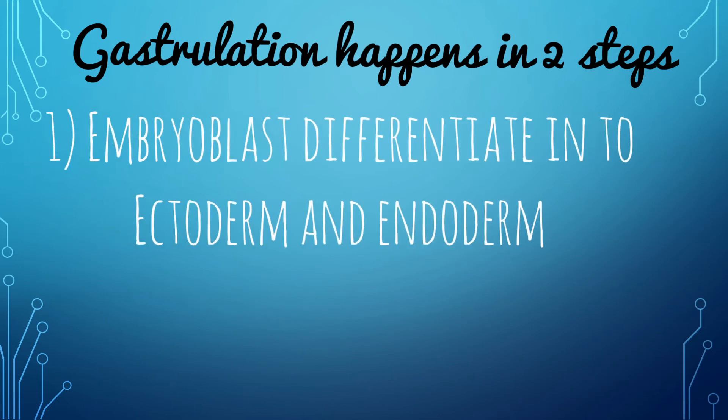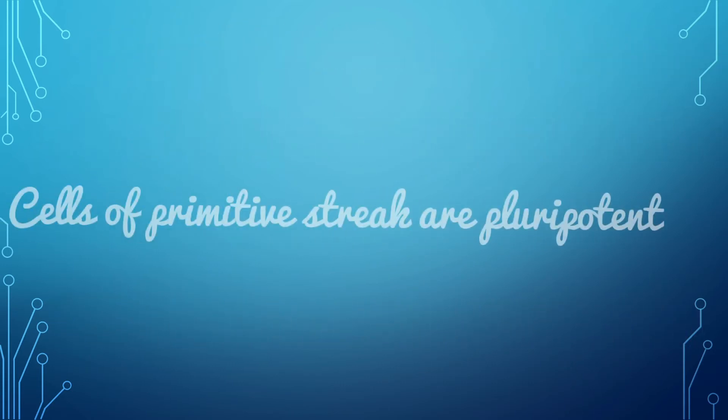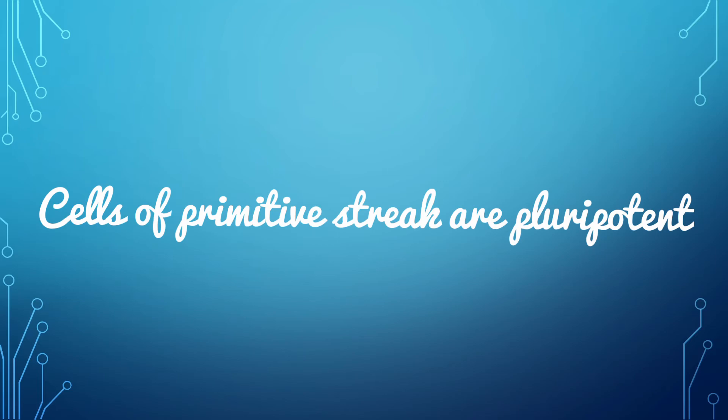First, the embryoblast differentiates into two layers, that is ectoderm and endoderm. Then the ectoderm forms a linear thickening in the midline of the embryonic disc called the primitive streak. The primitive streak gives rise to the third layer, that is the mesoderm. The cells of the primitive streak are pluripotent in nature, that is they have the ability to transform into any type of cells.